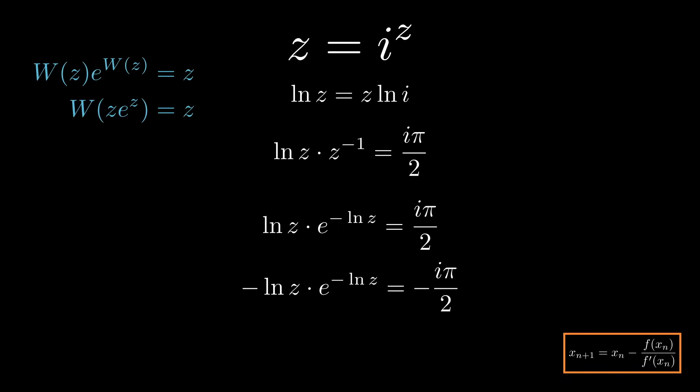And all of this was just leading to the fact now we can apply our Lambert W function to both sides since W of z e to the z is just z, or in this case, z is minus ln z.